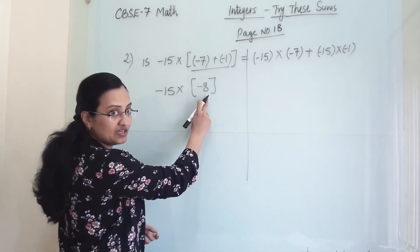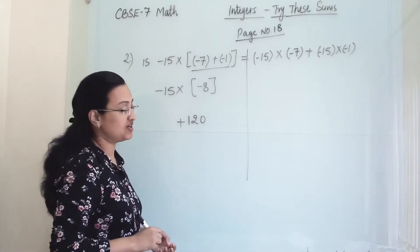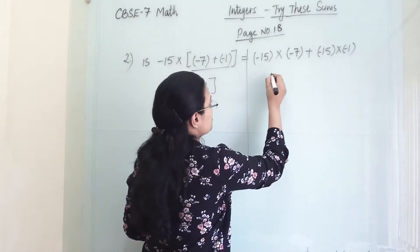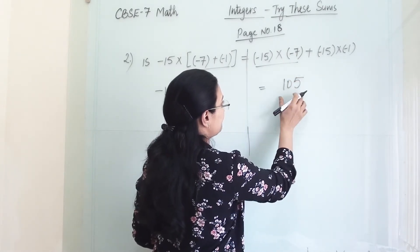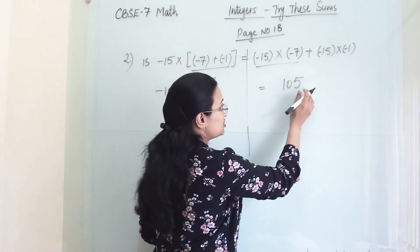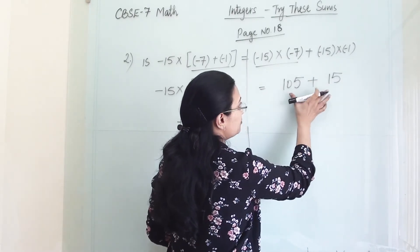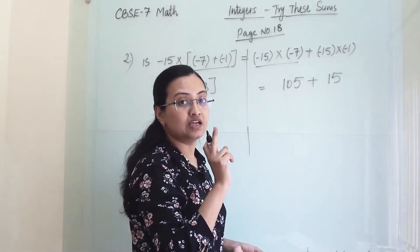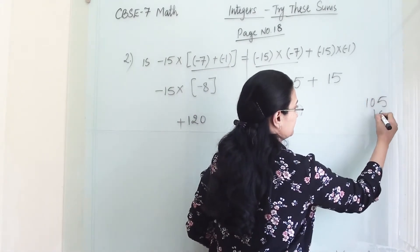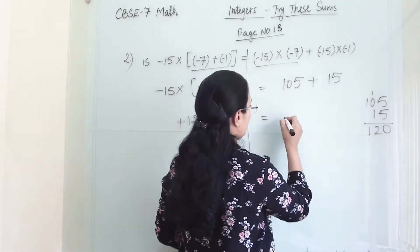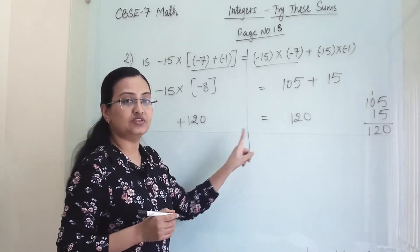Now 15 into 8 gives us 120. Minus times minus becomes plus, so our answer is plus 120. Now let us solve the right side: minus 15 into minus 7 — we solve this first and get 105, and minus minus becomes plus, so this is a positive number. 15 into 1 gives us 15, and minus minus becomes plus. So both answers carry positive sign and we get 105 plus 15, which gives us 120. The answer is positive. So both answers are the same.